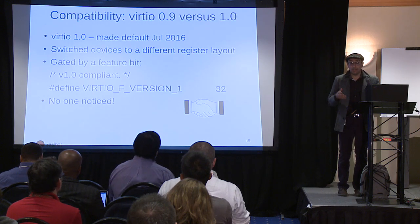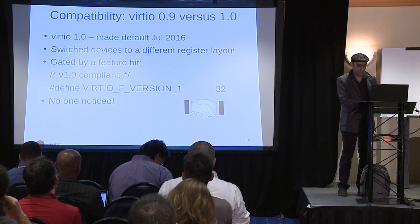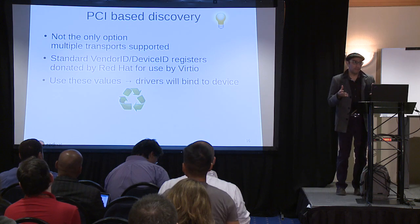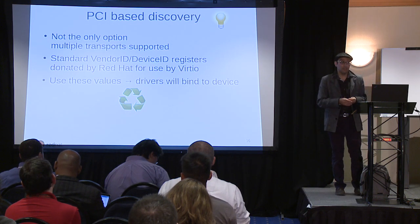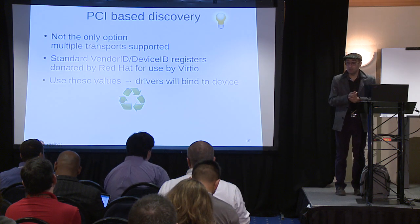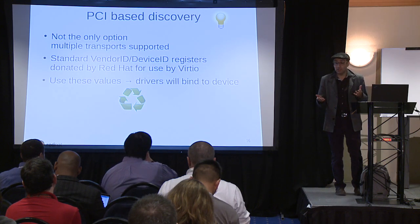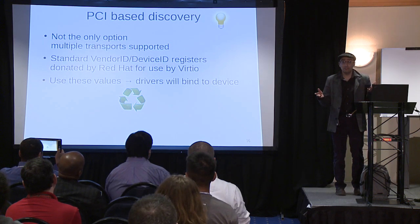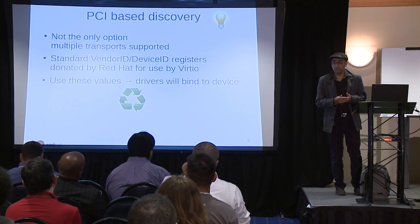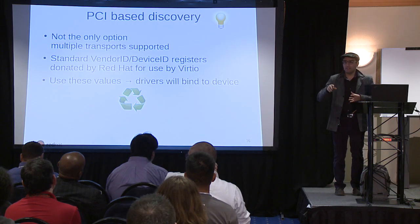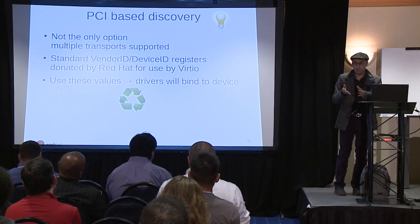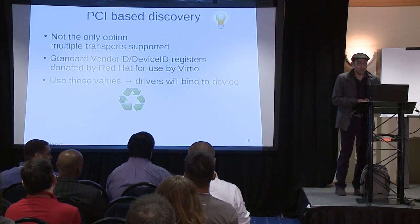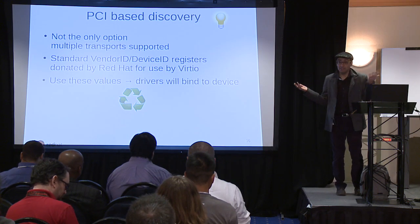I think by now we can say we know how to do compatibility — that's a great success story demonstrating how feature negotiation helps. PCI was also designed originally for simplicity, so people could use a lot of existing software to manage Virtio devices. It's not the only option, but it's widely deployed. Red Hat donated their vendor and device ID for use by Virtio, which means you can build your device, use this pair, and existing drivers will bind — you just follow the spec to the letter. No software needs to be written.